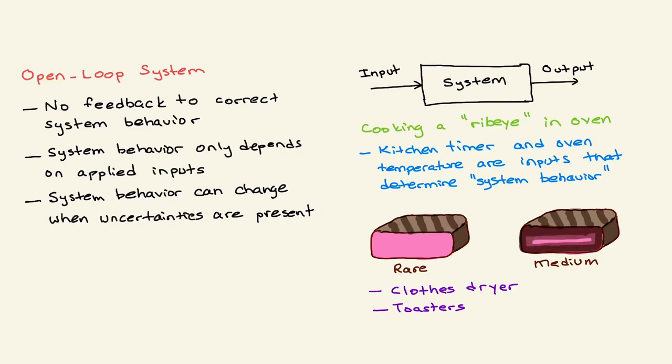Hello everyone, I will explain in basic terms what is a feedback control system. To understand this, first we need to understand what is an open-loop system. In an open-loop system, there is no feedback to correct system behavior.